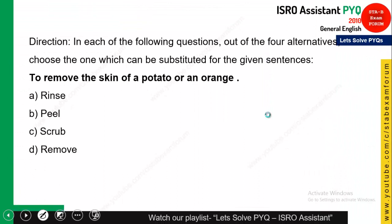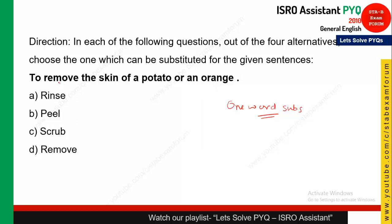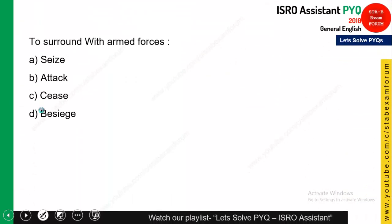This question is from one-word substitution. The statement is: 'to remove the skin of a potato or an orange.' The answer is 'peel' — we generally peel a potato, peel an orange, peel any vegetable. So 'peel' is the correct answer — a very simple one.